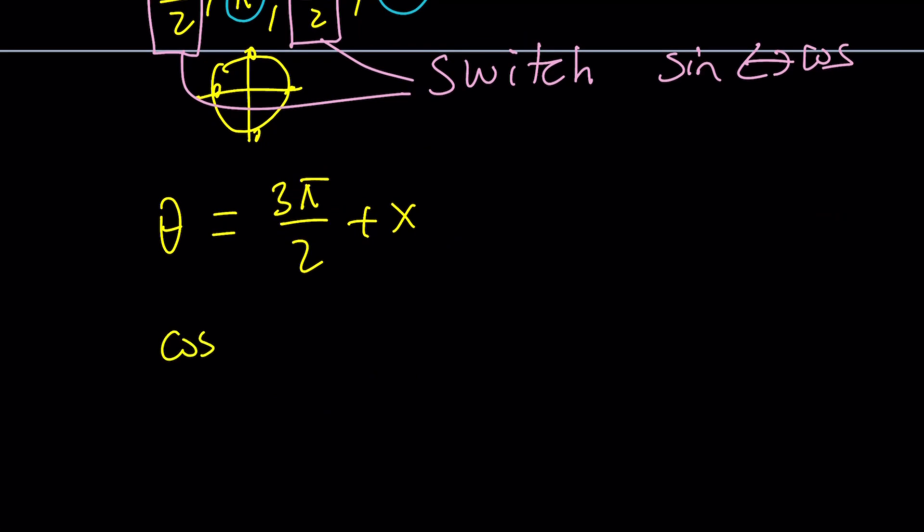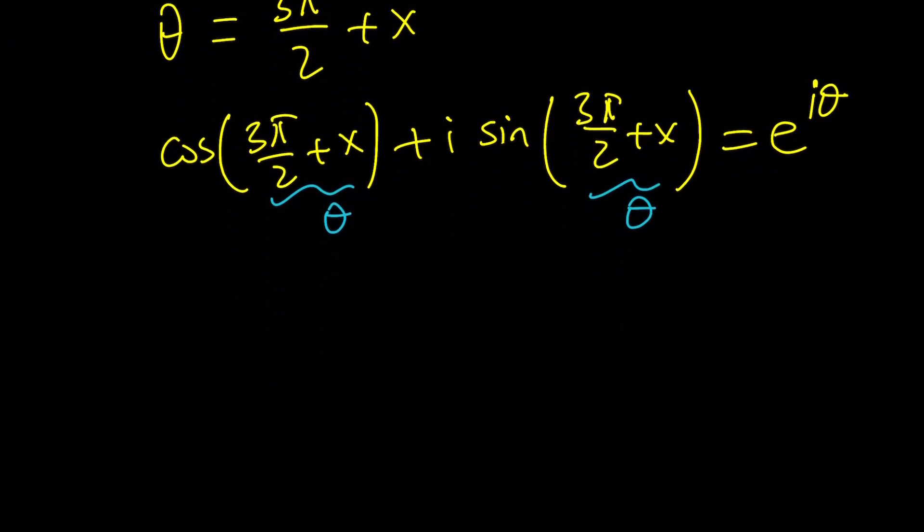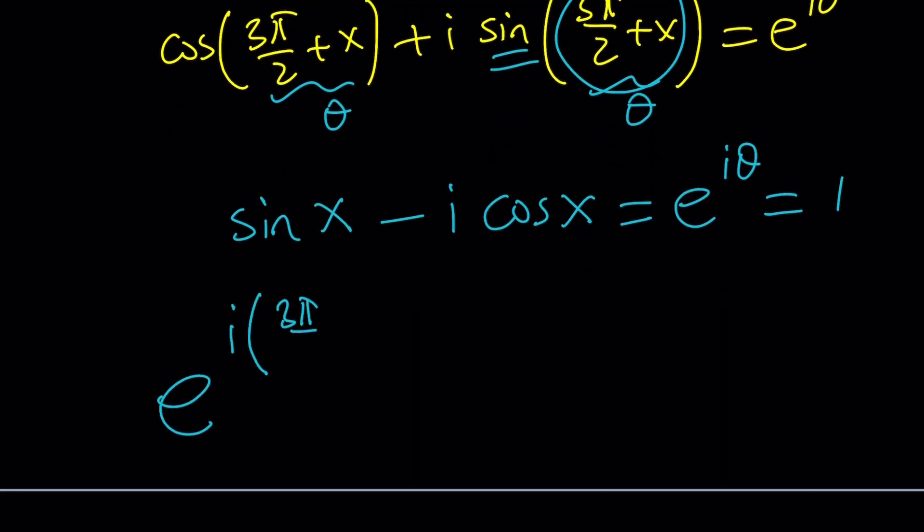I'm going to replace theta with 3 pi over 2 plus x. Then cosine 3 pi over 2 plus x plus i sine 3 pi over 2 plus x is going to be e to the i theta, because this is my new theta in terms of x. The 3 pi over 2 is going to touch x, change the name: this one to sine x, and this one to negative cosine x. Why did it become negative while changing the name? Because sine is negative in the fourth quadrant, and this puts an acute angle in the fourth quadrant. Now, this is equal to e to the i theta, and it's also equal to 1. It means that e to the i theta equals 1.